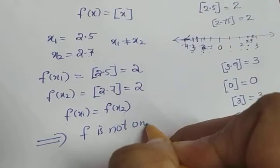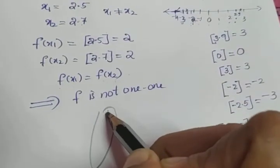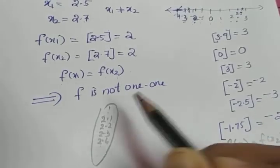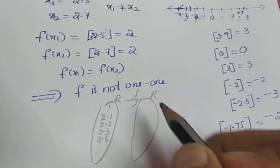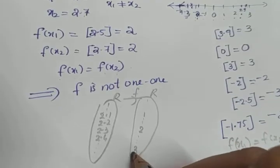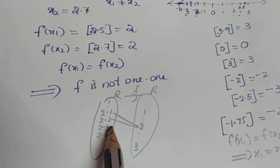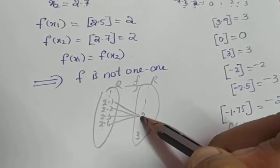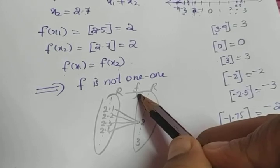Using a Venn diagram, we can see many elements like 2.1, 2.2, 2.3, 2.4, etc., all mapping to the same image 2 in the codomain. Many elements share the same image, so this is called a many-one function. Therefore, this function is not one-one.